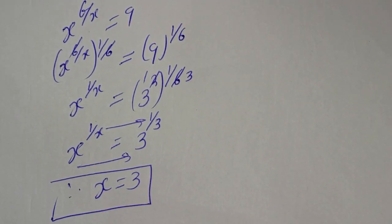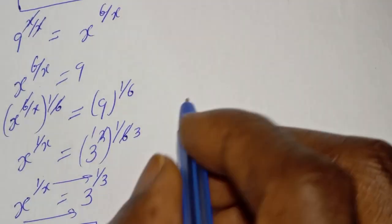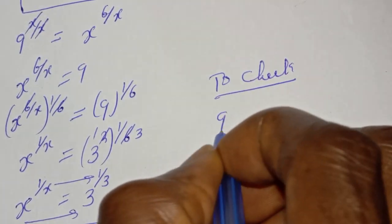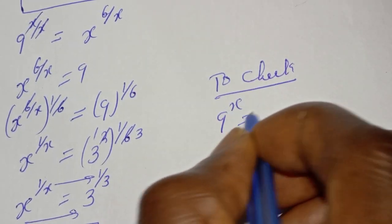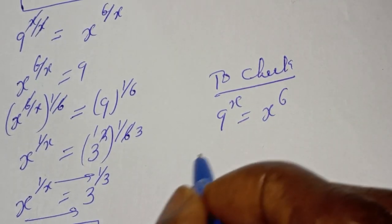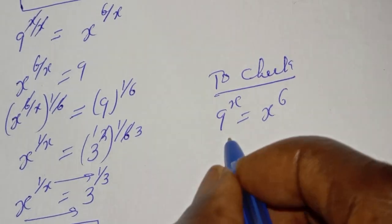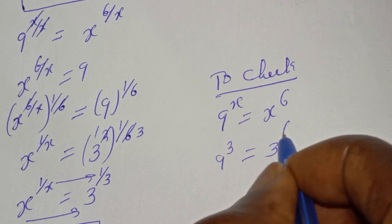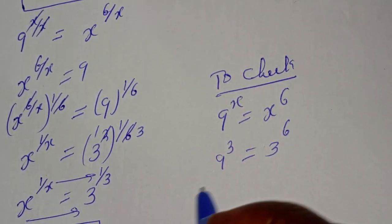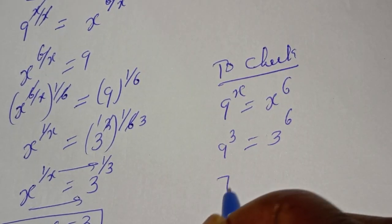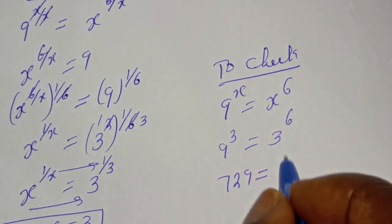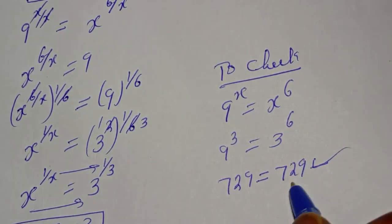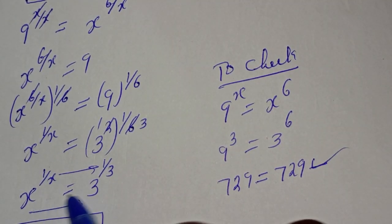We can check to confirm if our answer is right or wrong. Let's check: 9 raised to power s is equal to s raised to power 6. When s is 3, we have 9 raised to power 3 must be equal to 3 raised to power 6. Now, 9 raised to power 3 is 729, equal to 3 raised to power 6 which is also 729, which satisfies the given equation at s is equal to 3.